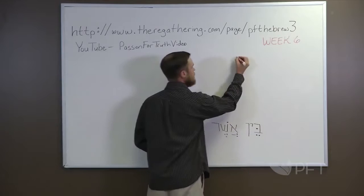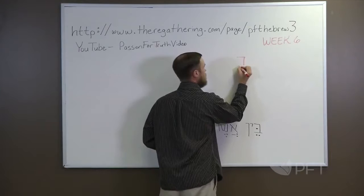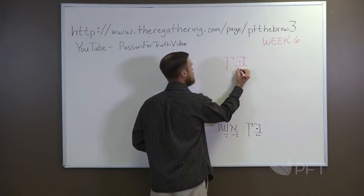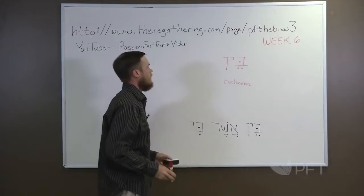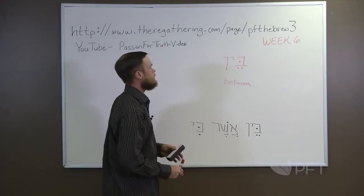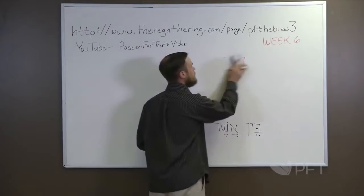Next is bain — beit, yod, nun. This is not to be confused with ben — beit, nun — which means son. They are homonyms but spelled differently. Bain means 'between,' and we use it just like the English 'between' with one exception: in Hebrew, we have to say 'between' before each of the words that define the boundaries.